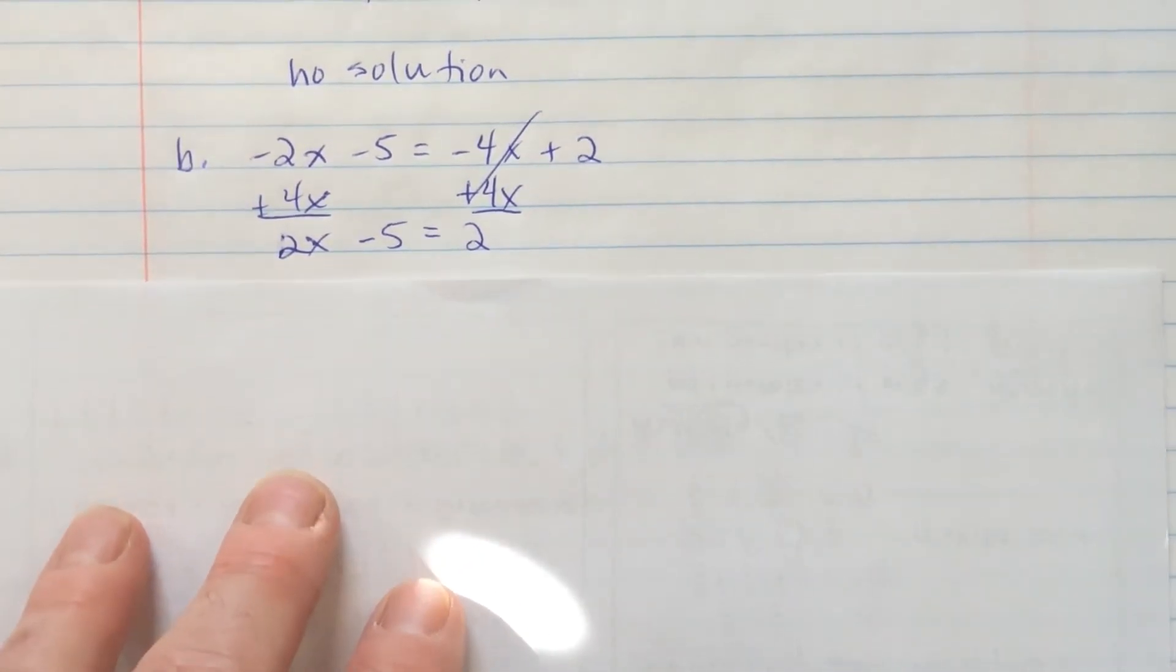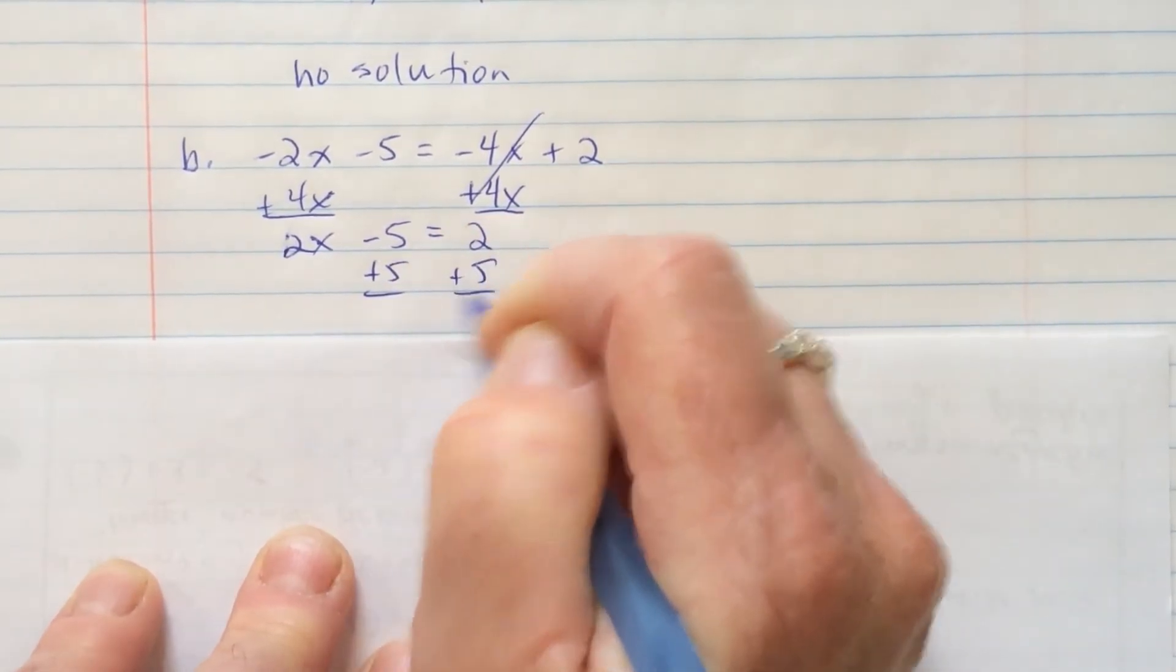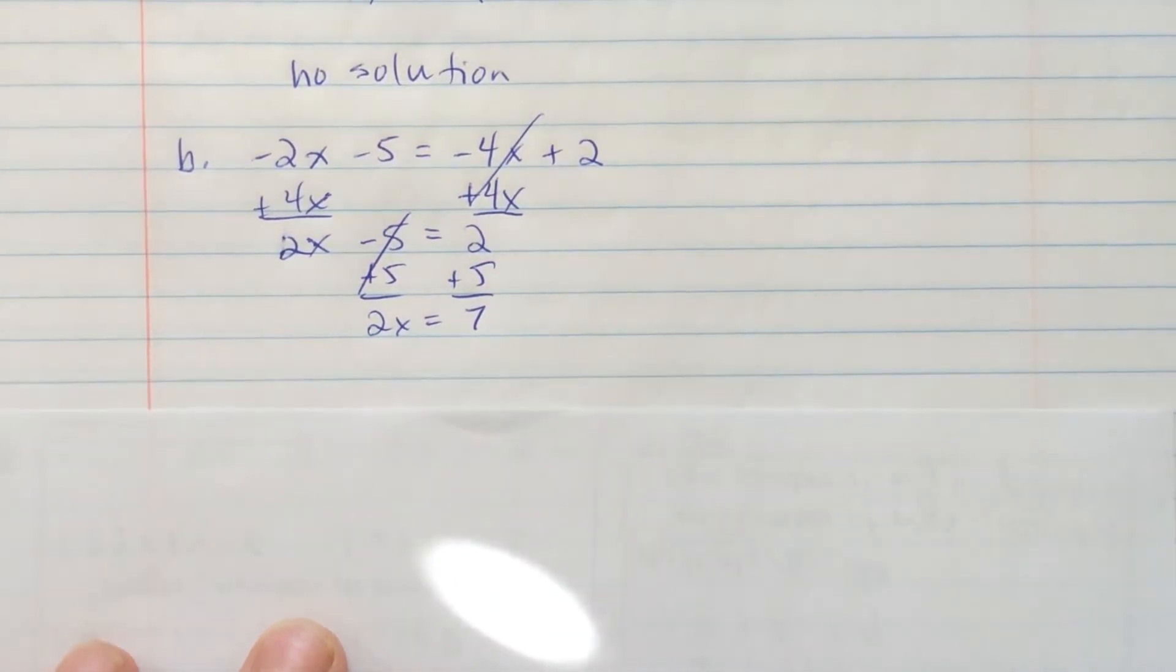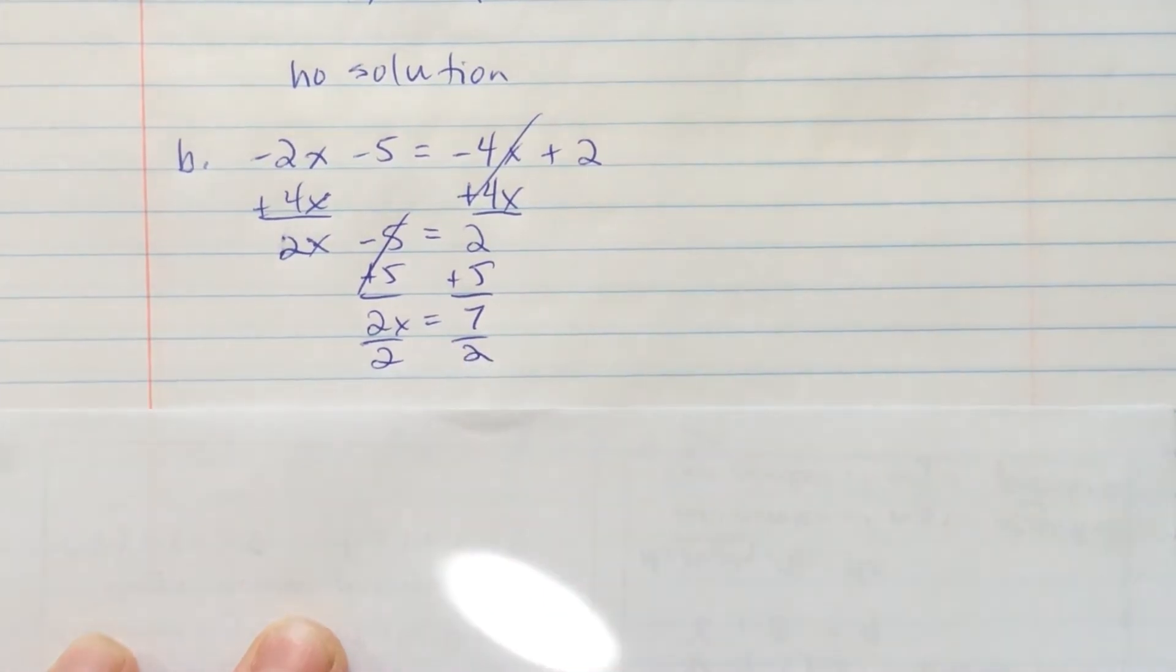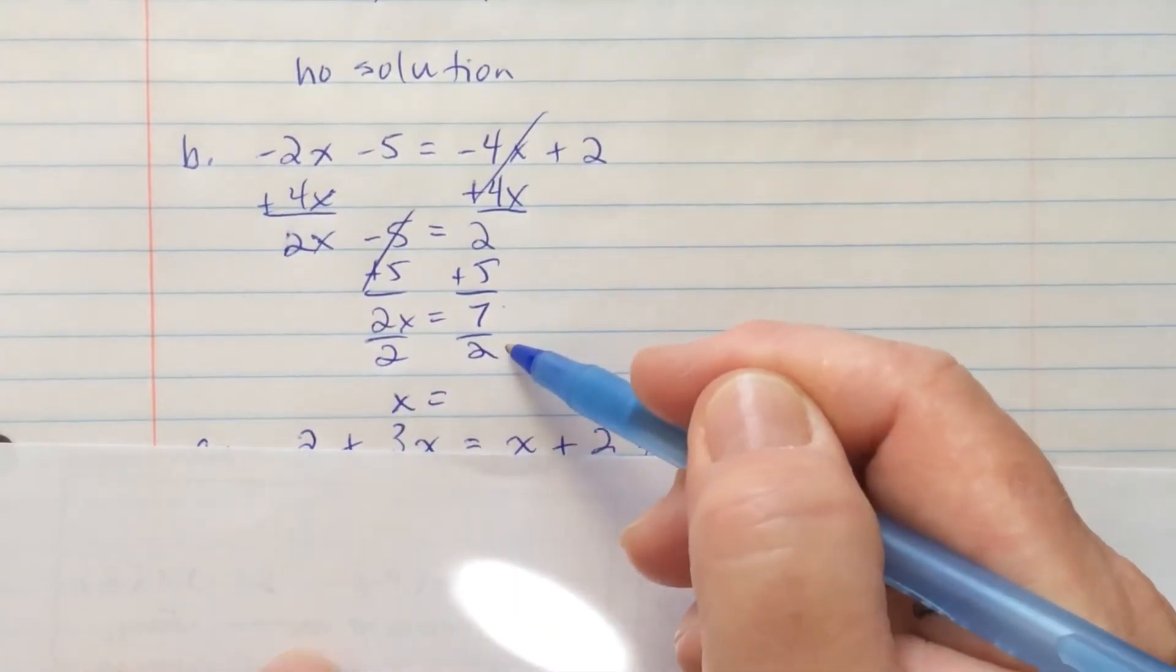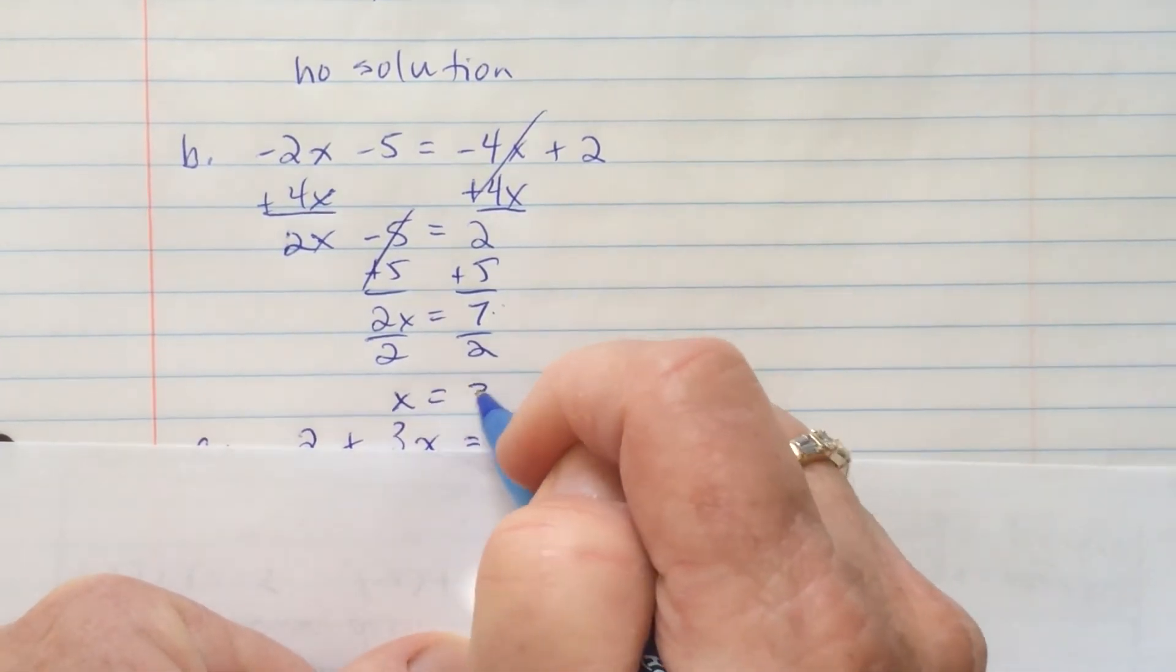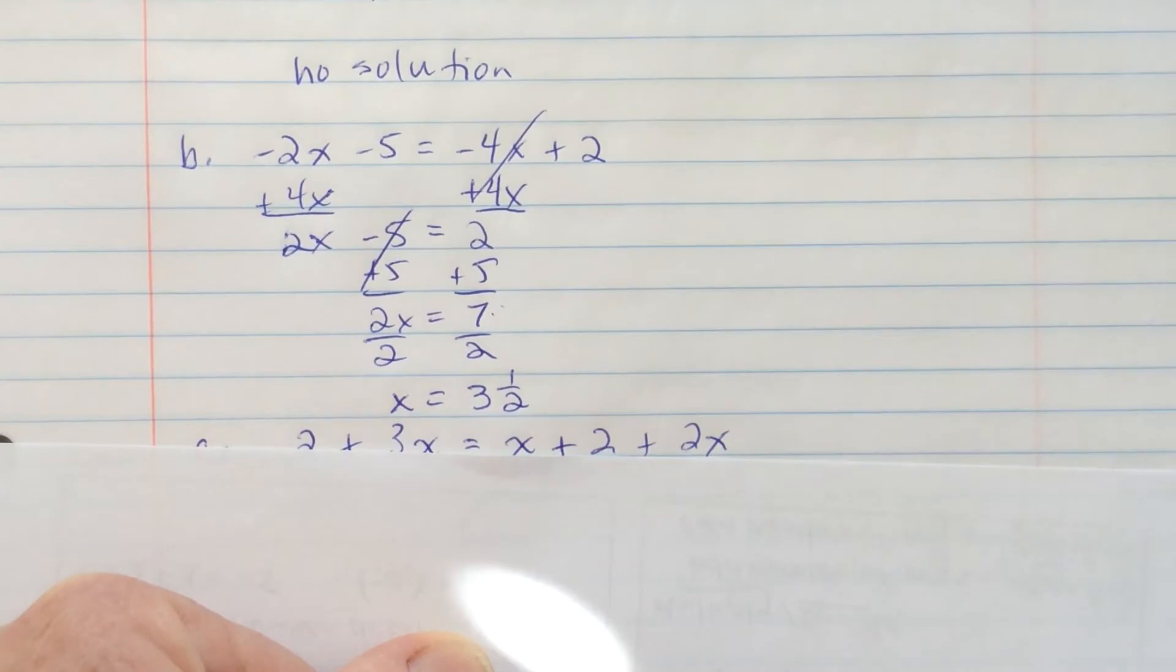I want to get 2x by itself. So, I'm going to add 5 to both sides. And this is gone. So, now I have 2x equals 7. I need to split 7 in half, and I get 7 halves. 7 is not evenly split. You can leave it as an improper fraction of 7 over 2, or you can change it to 3 and a half, or 3.5.